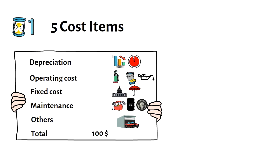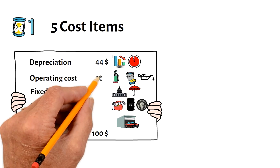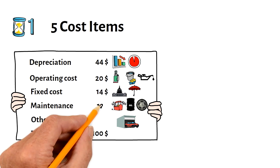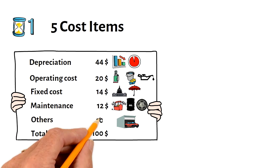For each $100 spent, $44 goes to depreciation, $20 to operating cost, $14 to fixed cost, $12 to maintenance and $10 to other items.